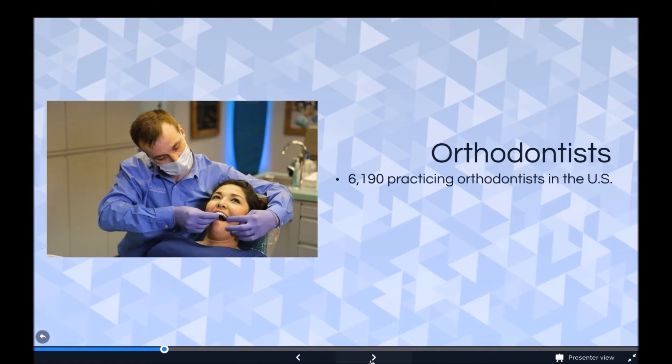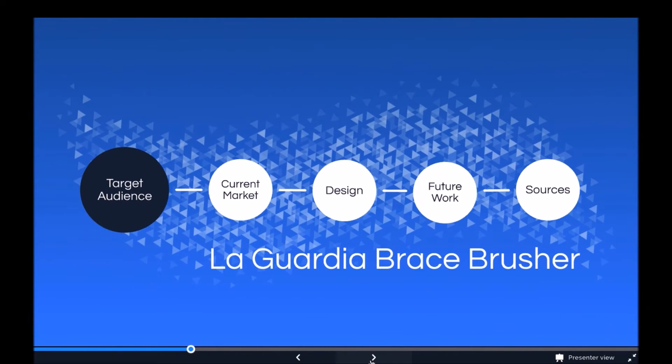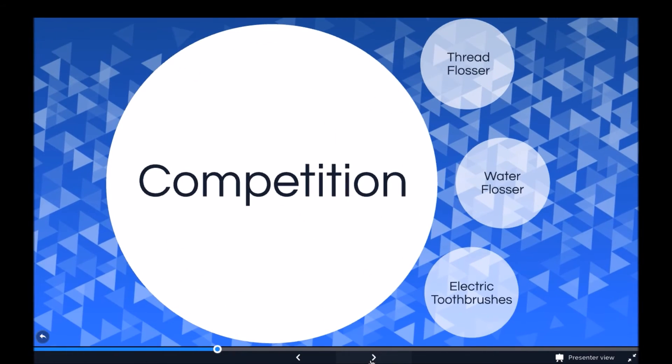Currently, there are around 6,190 practicing orthodontists in the US.